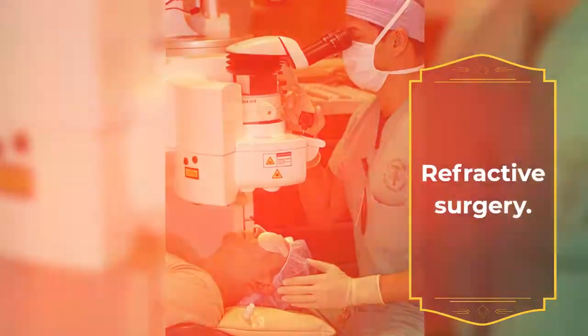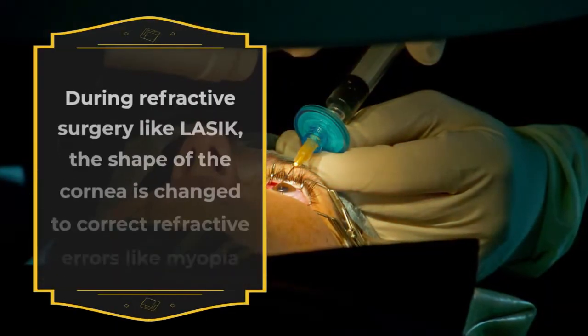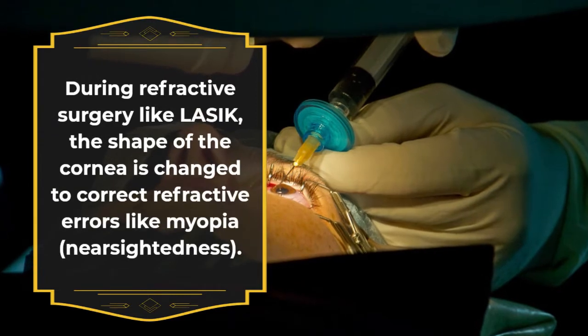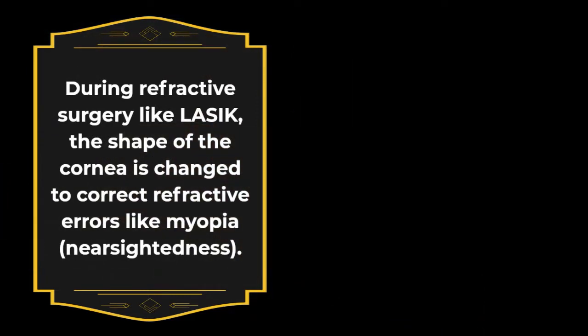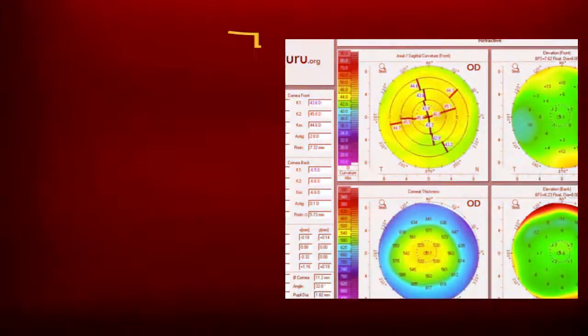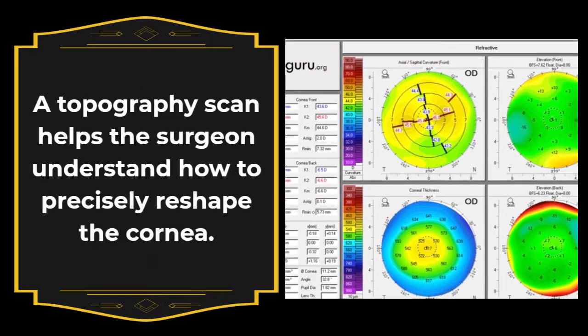Refractive surgery. During refractive surgery like LASIK, the shape of the cornea is changed to correct refractive errors like myopia or nearsightedness. A topography scan helps the surgeon understand how to precisely reshape the cornea.